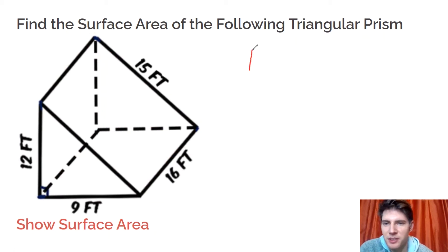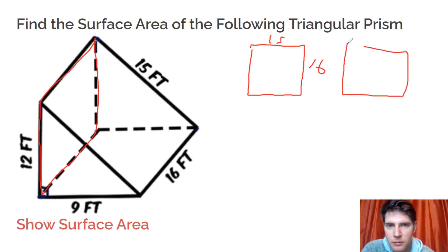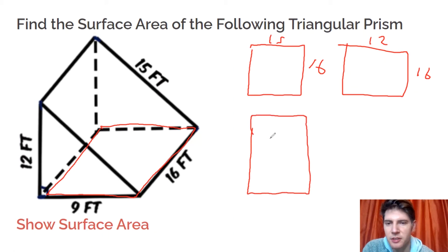So this front face is 15 by 16, this back face right here is 12 by 16, and then this bottom is 9 by 16. We'll have another rectangle that's 9 by 16, and then there's two matching triangles that are 12 by 9 with the right angle.